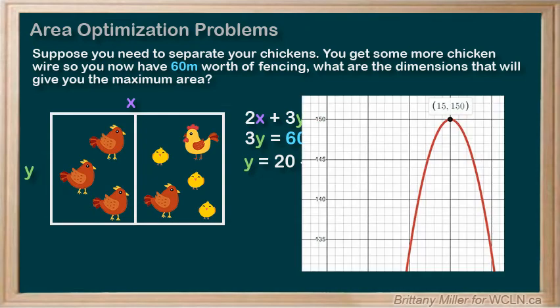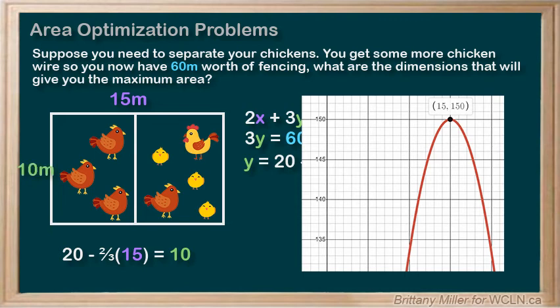We graph that area function and see our maximum occurring at x equals 15. So the length is 15 meters. The width will be 20 minus two-thirds times 15, which equals 10. So the width would be 10 meters. And that's it.